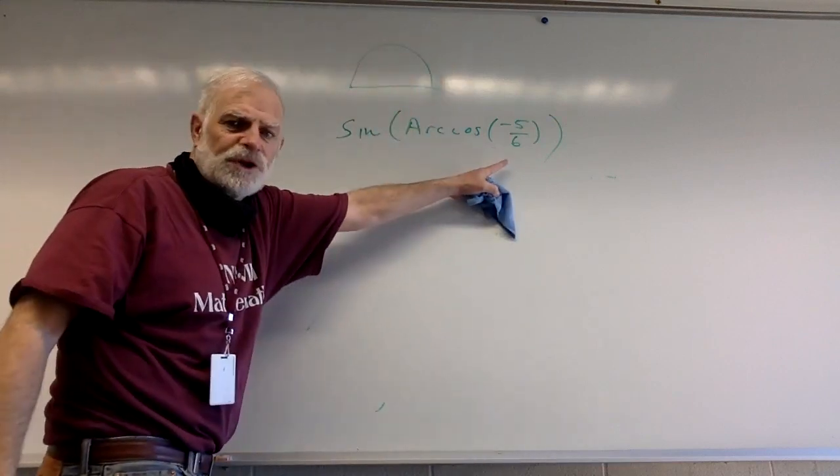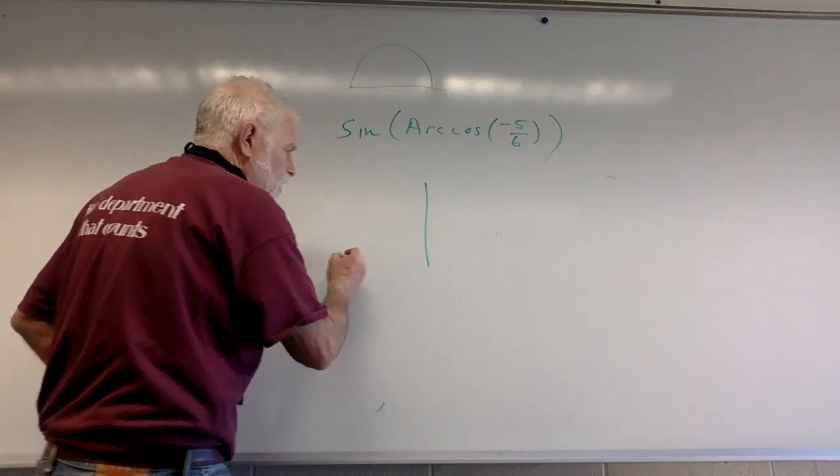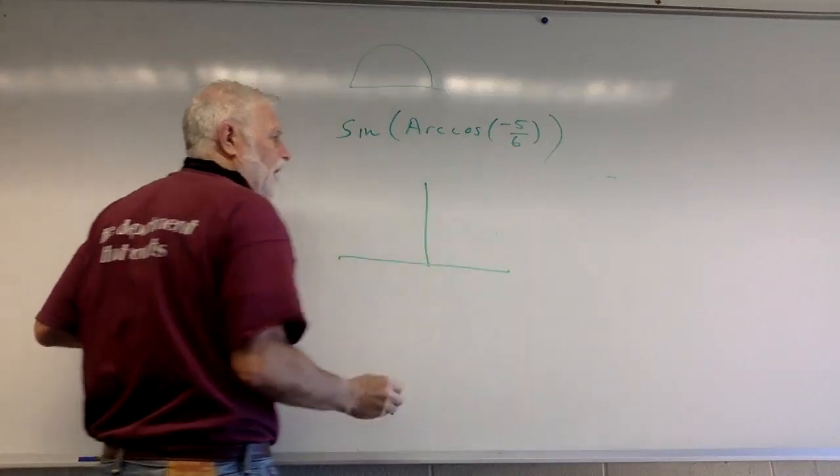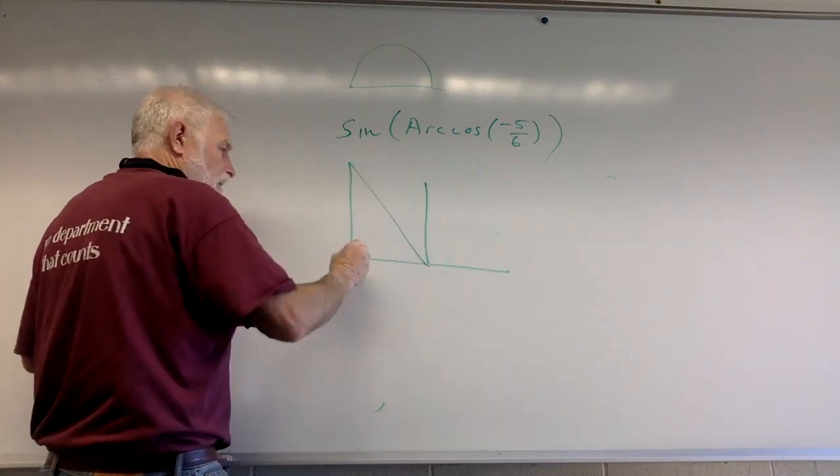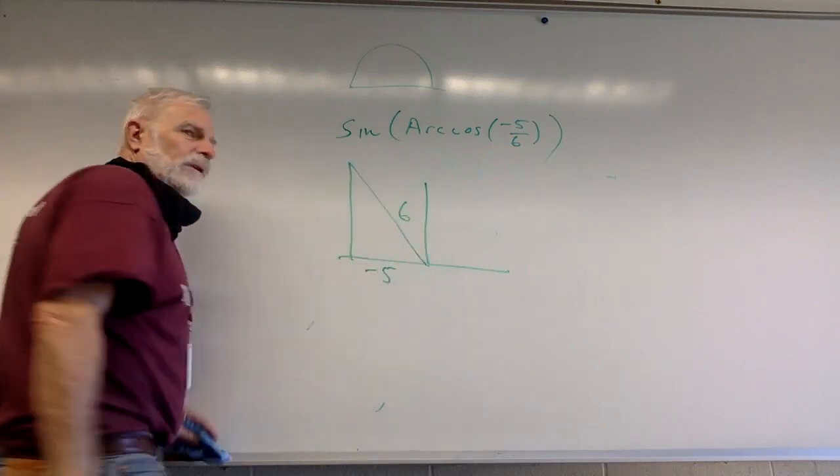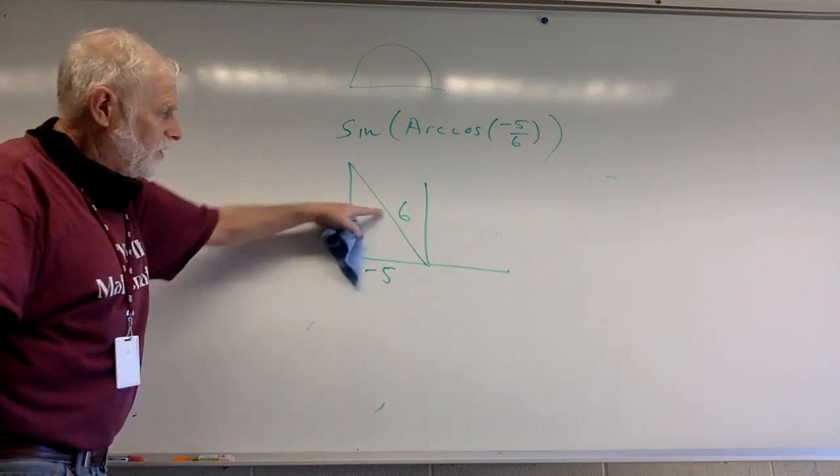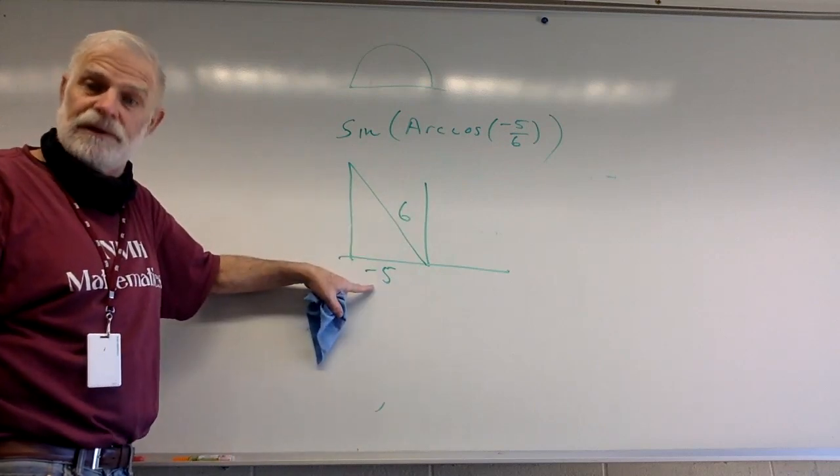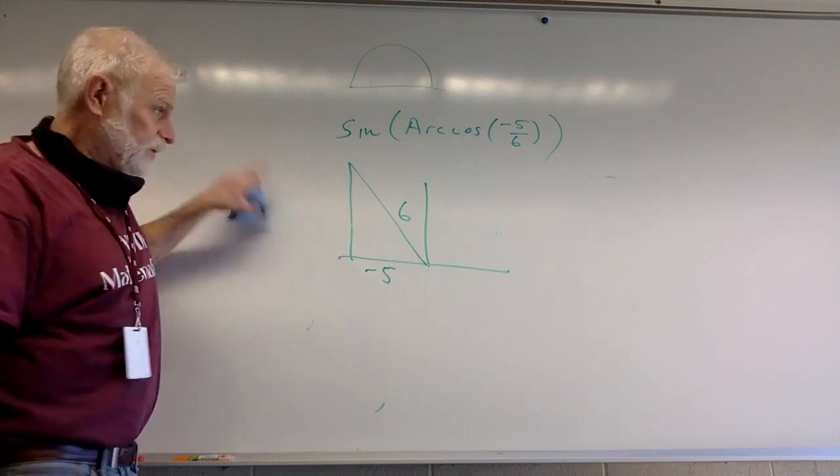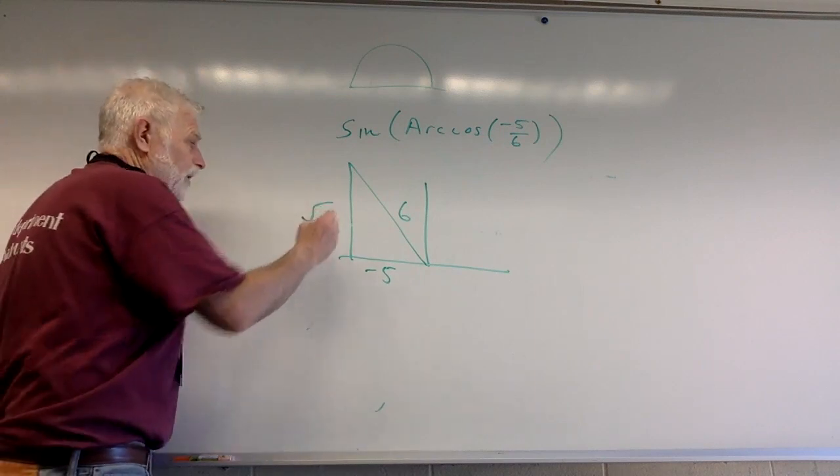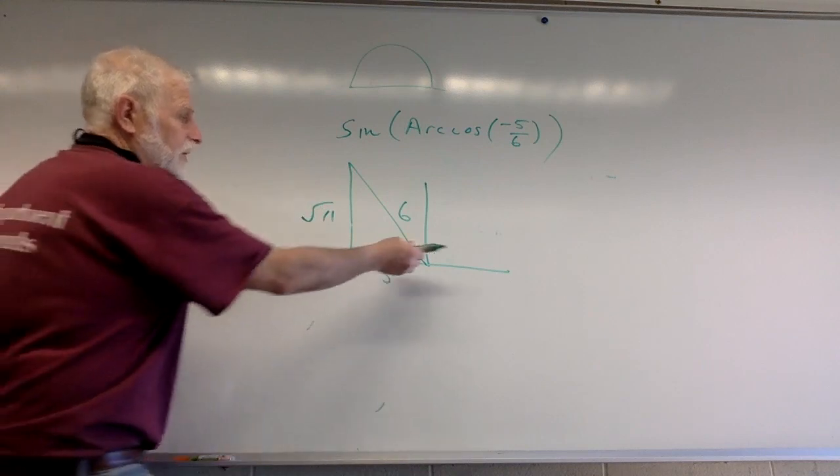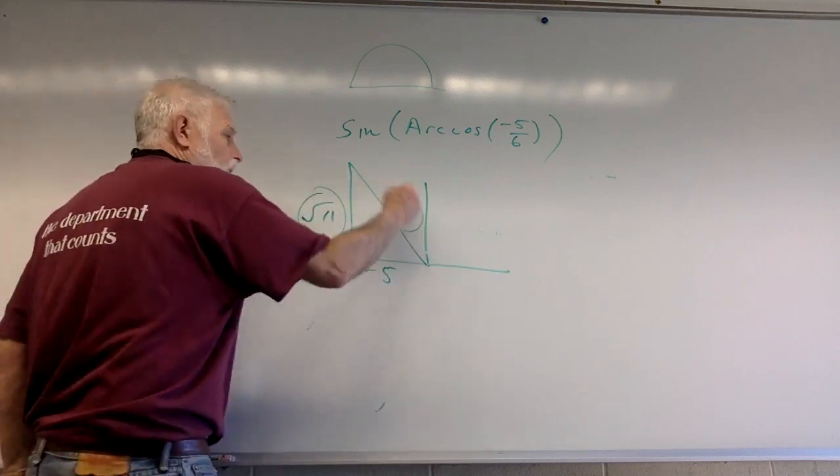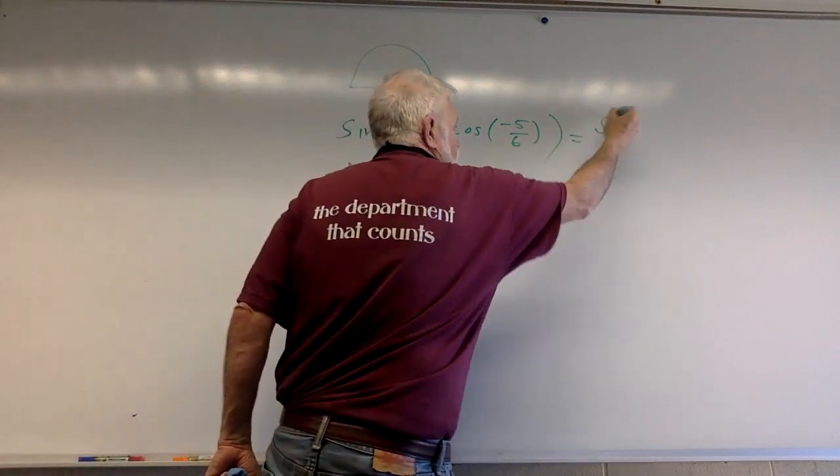36 and 25, I'm going to subtract 25 from 36, which is 11. So that's the √11. I now have this angle and I know the sine of that angle is opposite over hypotenuse: √11/6. Alright, so we practiced that.